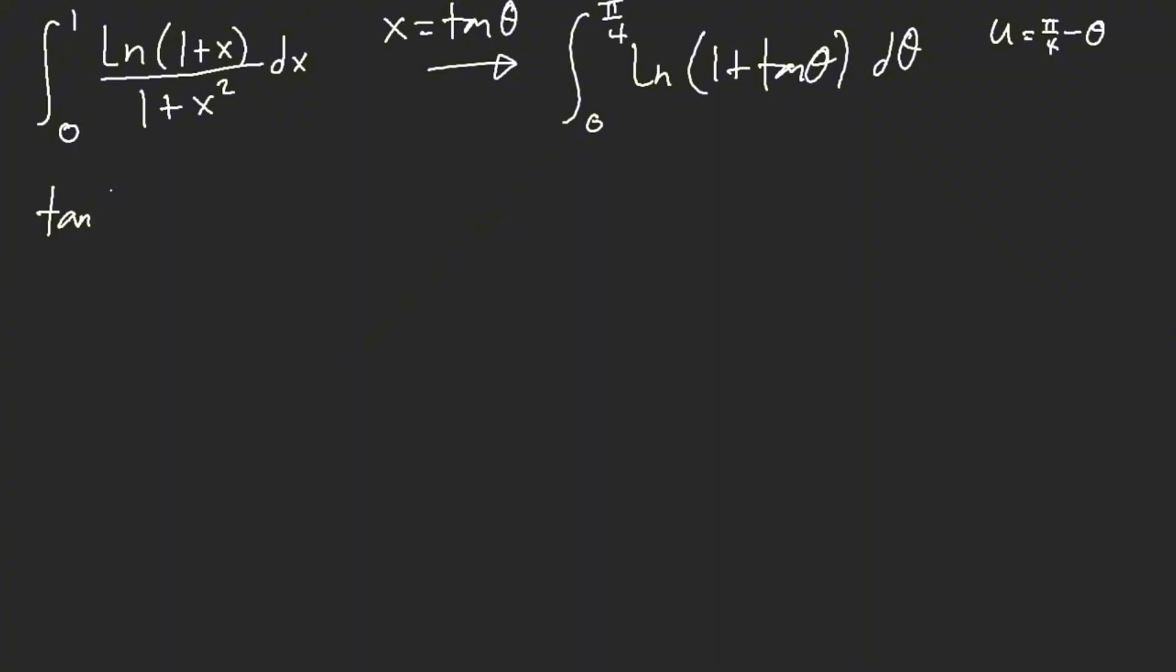So tangent of pi over 4 minus x. I understand this is 1 minus tan x over 1 plus tan x. However, 1 plus tan of pi over 4 minus x, what this actually gives us is 2 over 1 plus tan x.